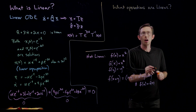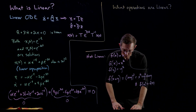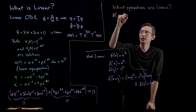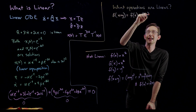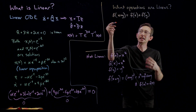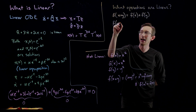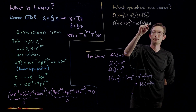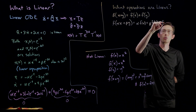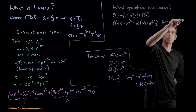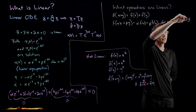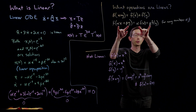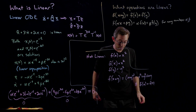So linear means: f(x + y) = f(x) + f(y) for any linear function f. More generally, a function is linear if f(α·x + β·y) = α·f(x) + β·f(y) for any numbers α and β. This is the working definition of what it means for a function to be linear.